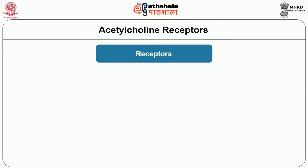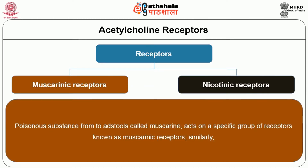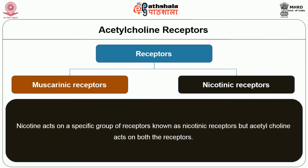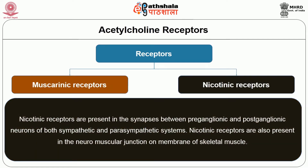There are two types of receptors through which acetylcholine acts on tissues: muscarinic receptors and nicotinic receptors. The poisonous substance from toadstools called muscarine acts on muscarinic receptors, while another substance called nicotine acts on nicotinic receptors; however, acetylcholine acts on both. Muscarinic receptors are present in all organs innervated by the postganglionic fibers of the parasympathetic system and by sympathetic cholinergic nerves. Nicotinic receptors are present in the synapses between preganglionic and postganglionic neurons of both sympathetic and parasympathetic systems, and also at the neuromuscular junction on the membrane of skeletal muscles.